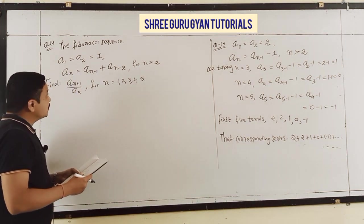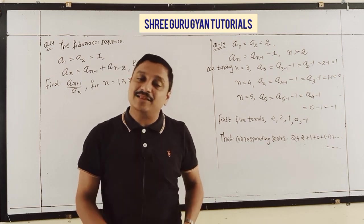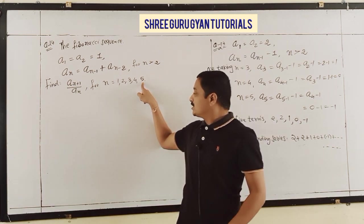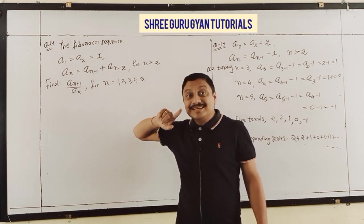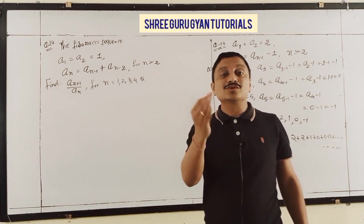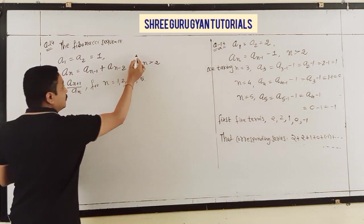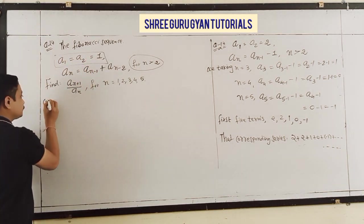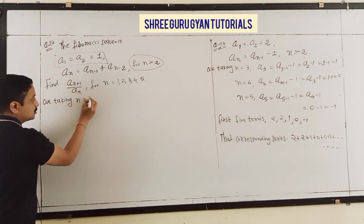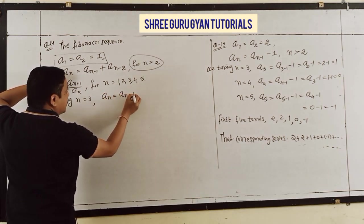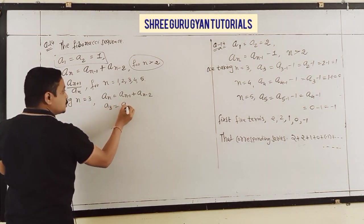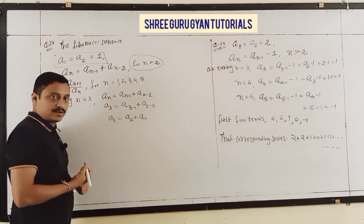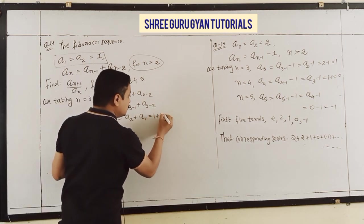The Fibonacci sequence is similar to arithmetic and geometric sequences. First I need values up to a6 since for N = 5 we need a6. Starting from n = 3: a3 = a2 + a1 = 1 + 1 = 2. For n = 4: a4 = a3 + a2 = 2 + 1 = 3.